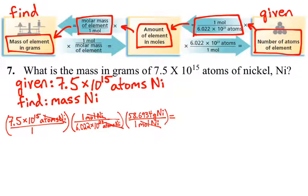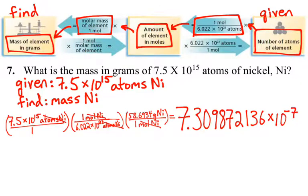And then we see there how our moles of nickel will cancel out, and we end up with grams of nickel, which we are asked to find in the problem. So, we get this big long number again, 7.309872136 times 10 to the negative 7. That's too many significant figures. So, if we take a look at the numbers we are given, we have 7.5 times 10 to the 15 atoms of nickel. That's two significant figures. Our Avogadro's number down here is 6.022 times 10 to the 23rd atoms. That's four significant figures. And the average atomic mass that we used has six significant figures.